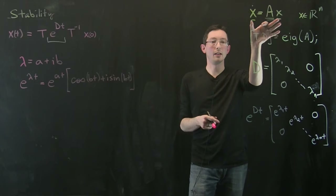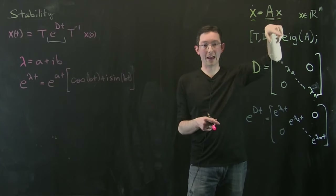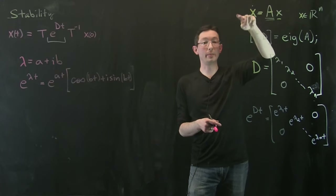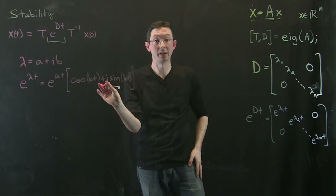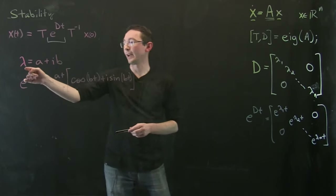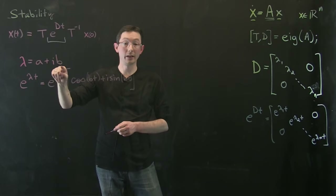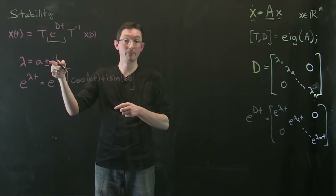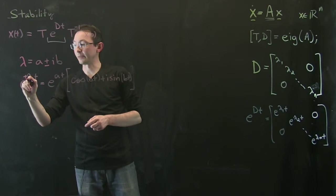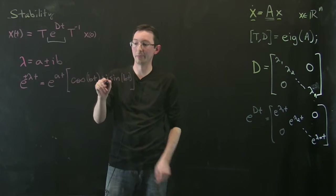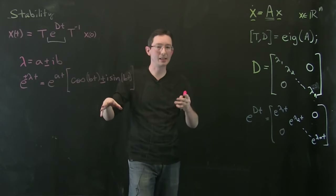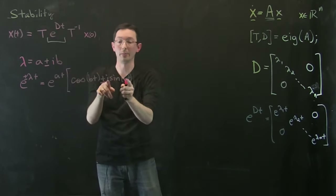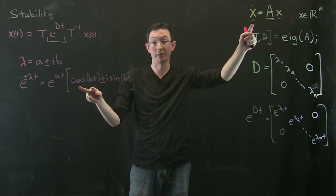In a real-valued system — where all components of x are real and all coefficients of A are real — the solution should stay real forever. If we ever have an eigenvalue with an imaginary part, it always comes in a conjugate plus-or-minus pair, giving us ±i·sine(bt) terms. When we take that mixture and add them up, the imaginary parts cancel and we get real-valued outputs.